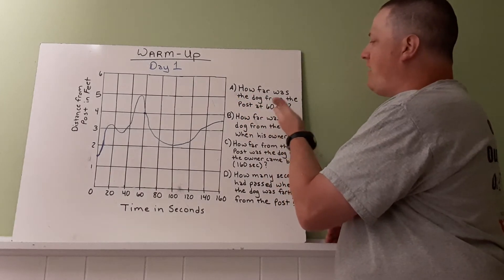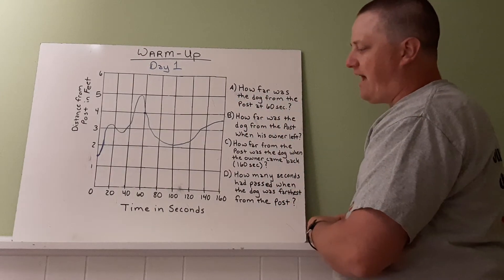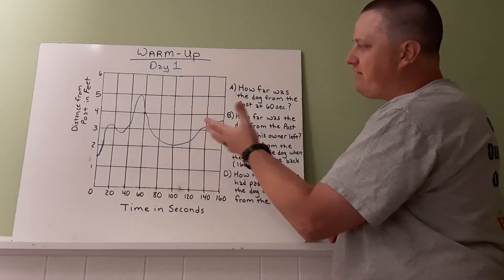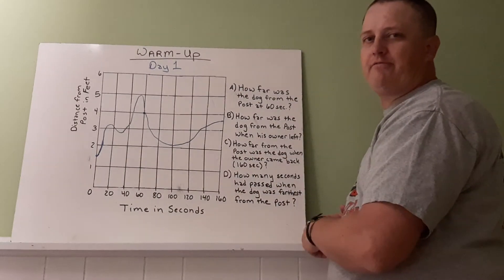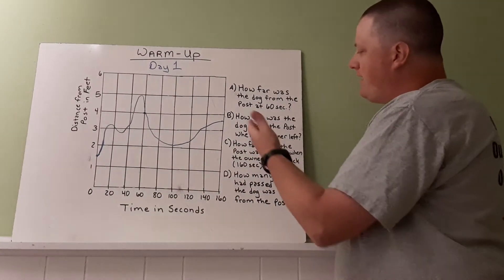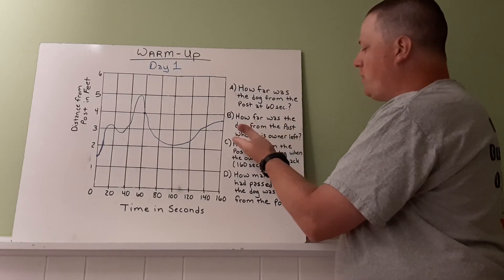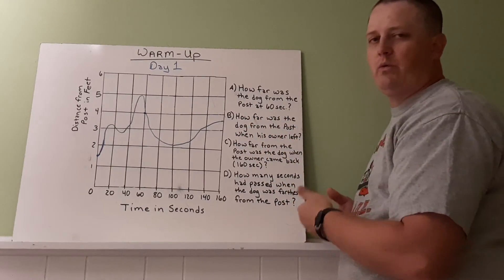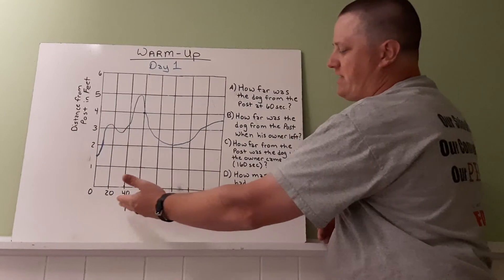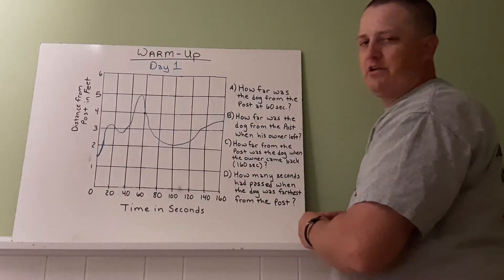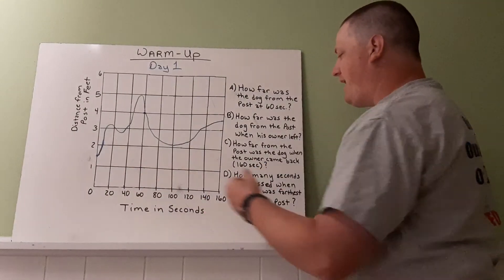So how far was the dog from the post at 60 seconds? So find 60 seconds and estimate about how far from the post the dog was. How far was the dog from the post when his owner left? So when his owner left, this is how much time in seconds the owner has been away. So when he left, it had to be where?